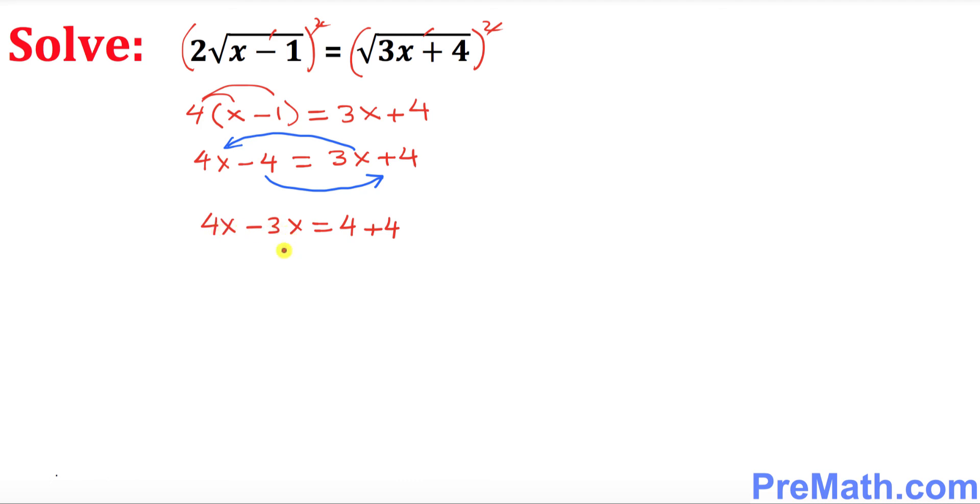So 4x take away 3x is going to be 1x equals to 8, and that is our answer. Thanks for watching and please subscribe to my channel for more exciting videos.